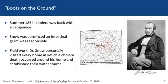An individual by the name of Dr. John Snow carried out what we now refer to as boots-on-the-ground epidemiology. In the summer of 1854, cholera was back with a vengeance. Dr. Snow was convinced that it was actually an intestinal germ and not miasms that was responsible for the disease. The fieldwork that he carried out was as follows: he personally visited every home in which a cholera death had occurred in the area surrounding his home and established their water source. You can see a depiction of the map that he created, in which every red dot represents a house in which a cholera death had occurred, and the blue dots represent the pumps from which people drew their drinking water.